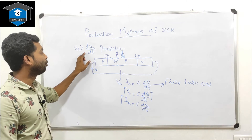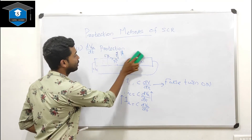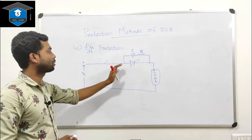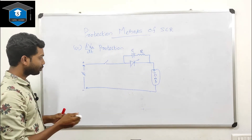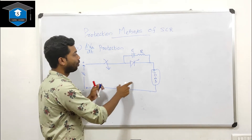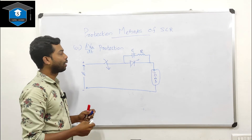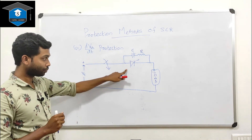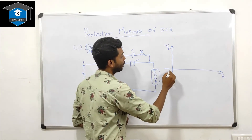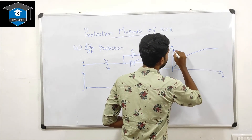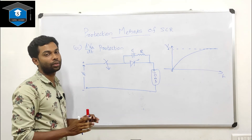In order to protect the SCR from high dv/dt, we use a snubber circuit connected in parallel with the SCR. A snubber circuit is an RC series element connected in parallel across the SCR. When a certain voltage appears across the snubber circuit (the RC element), the capacitor — due to its property — will not allow a sudden change in voltage.